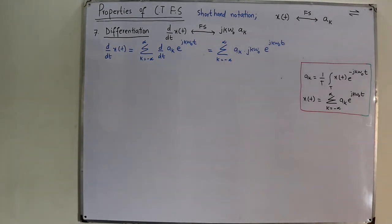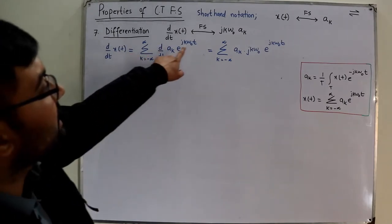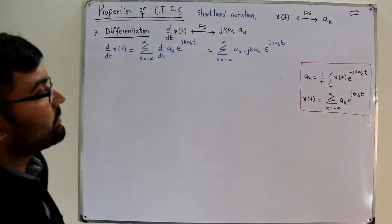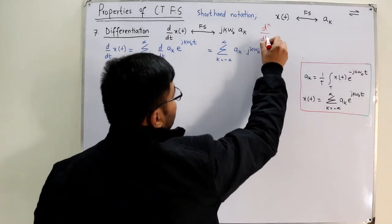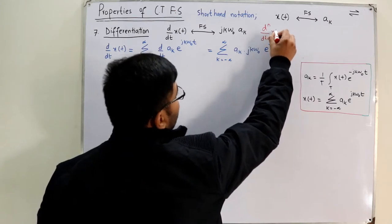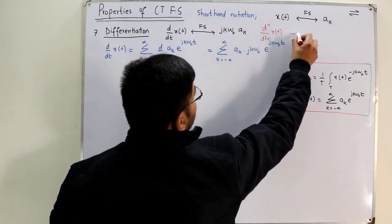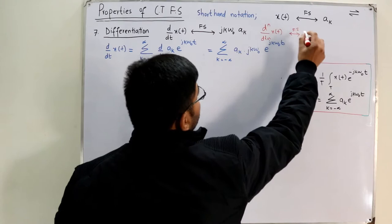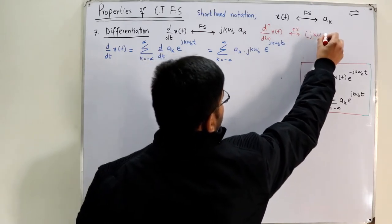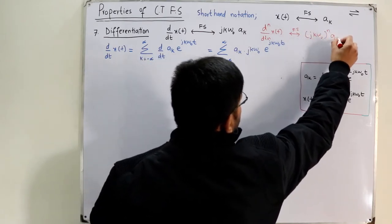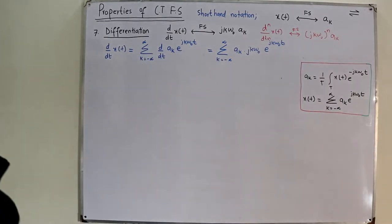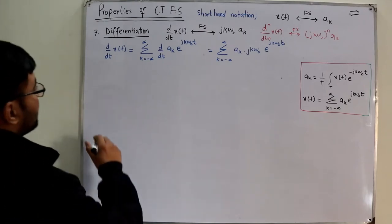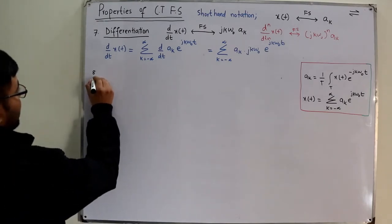This was for the first order. For the second order, the coefficients are multiplied by (jkω₀)². For the nth order, the nth differentiation of x(t) has Fourier coefficients equal to the original a_k multiplied by (jkω₀)^n.